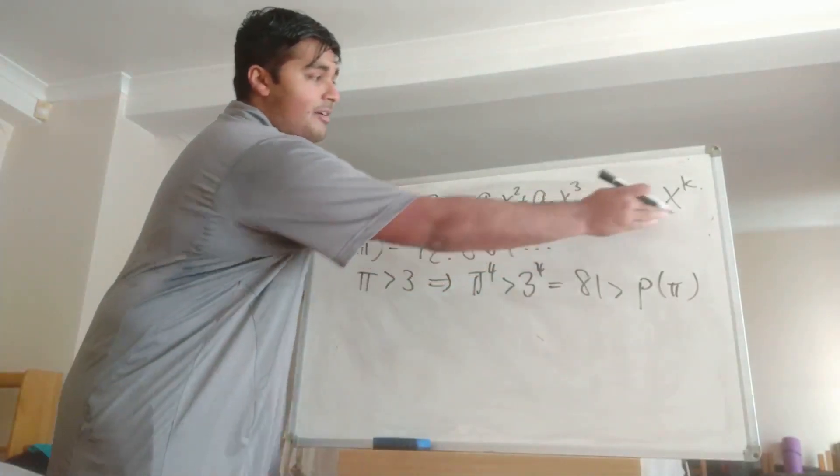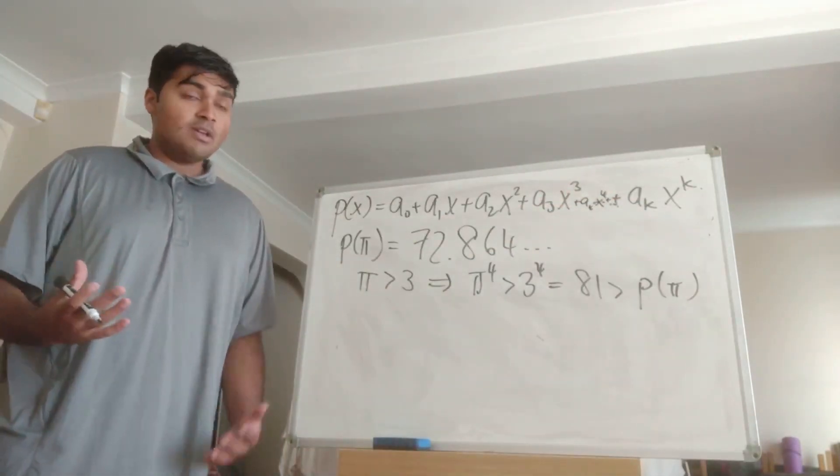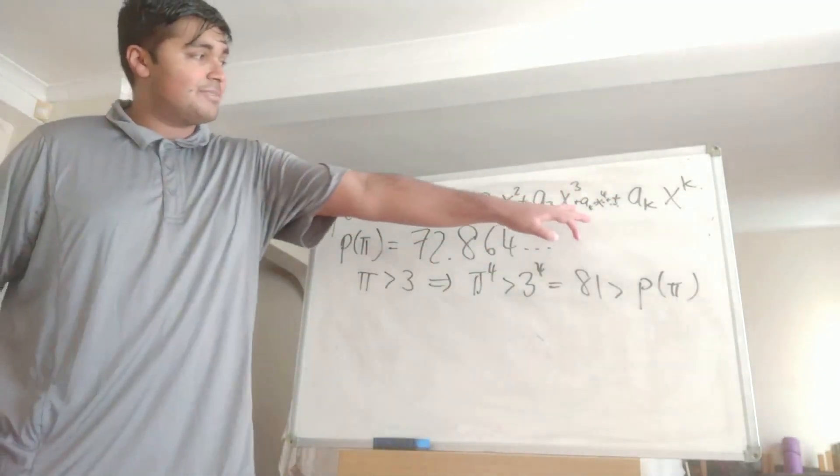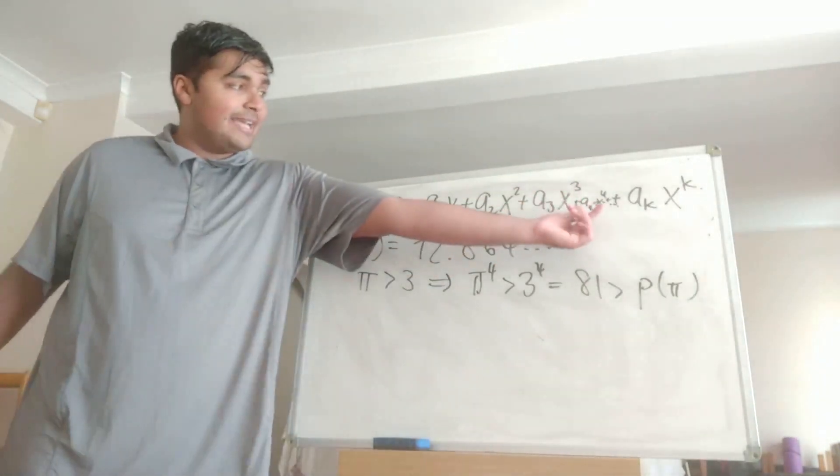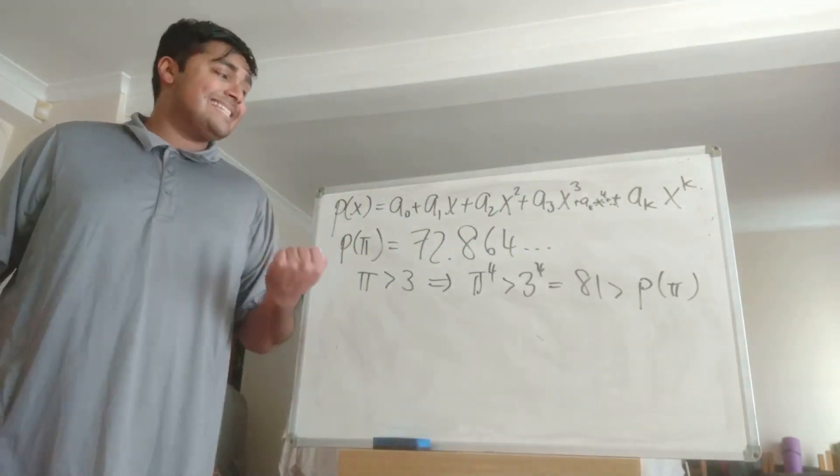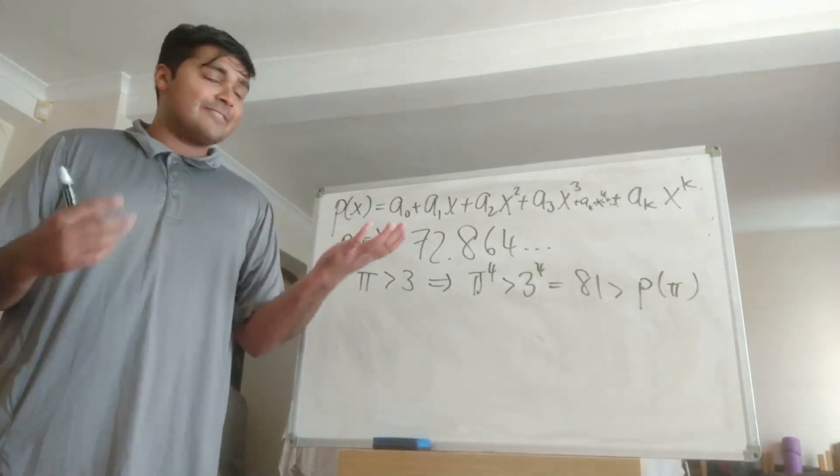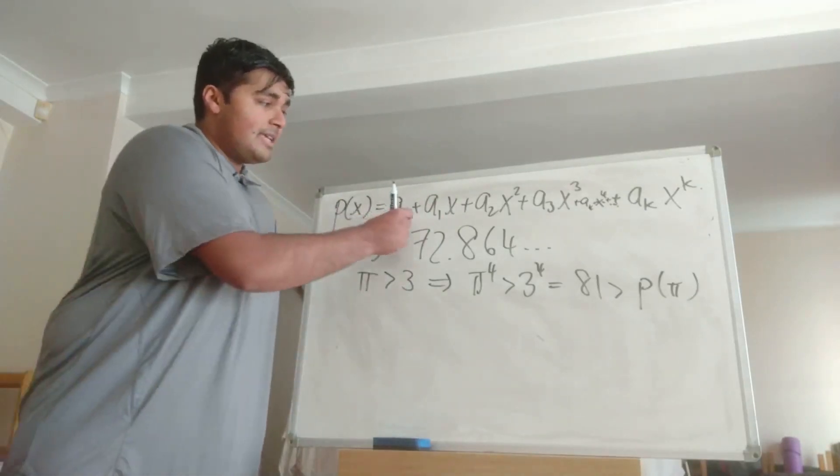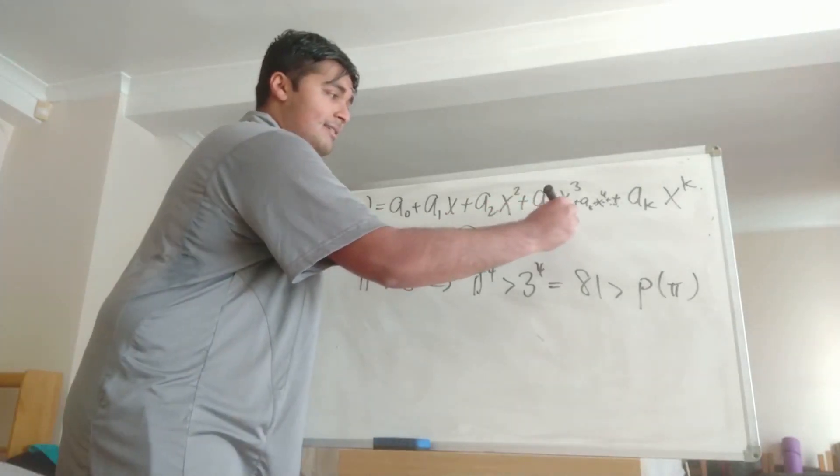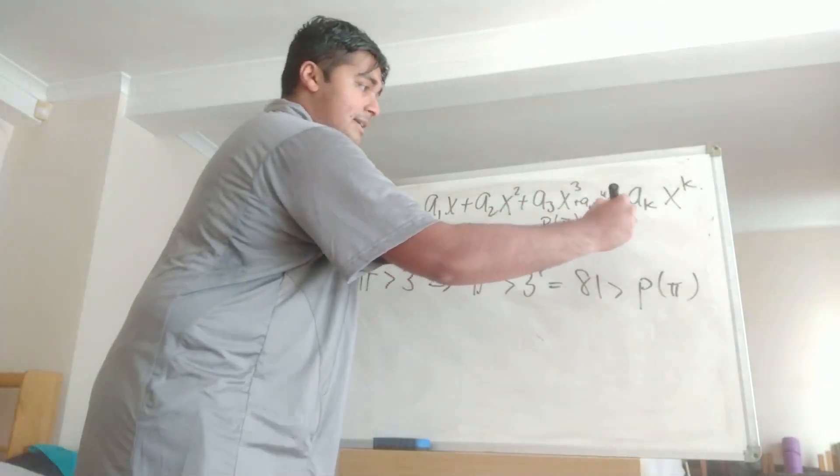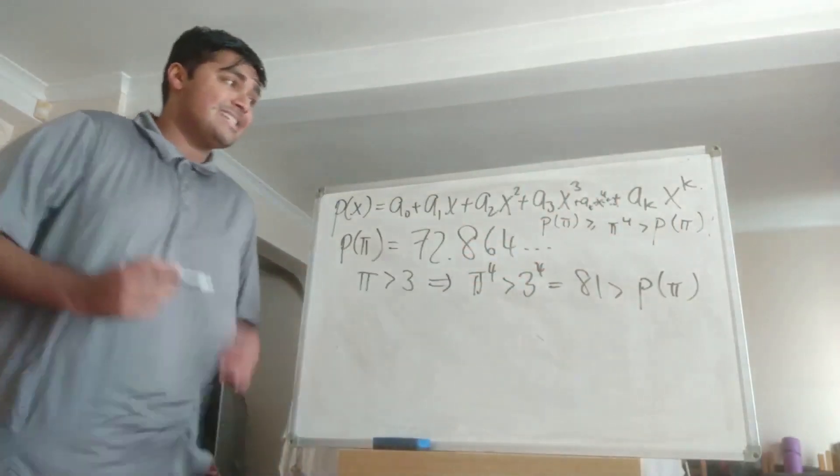Because if we had say a_4 being non-zero, so say it was one or bigger, then that term there would be at least pi^4 which we know is bigger than P(pi). Remember from the fact that everything is a non-negative integer, all of these guys here will be non-negative, so then we'd have that P(pi) is bigger than or equal to pi^4 which would then be strictly greater than P(pi) and that of course is a contradiction.